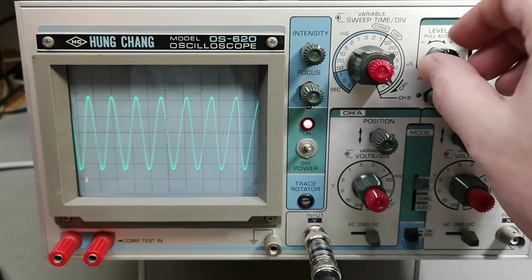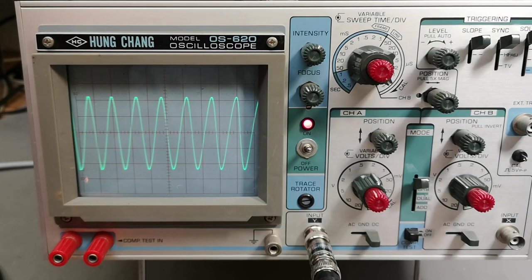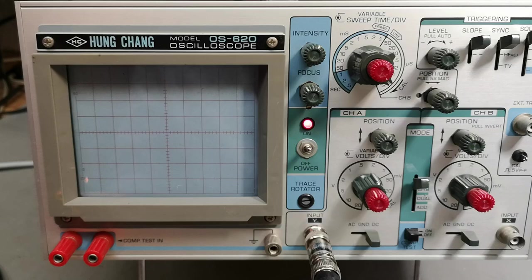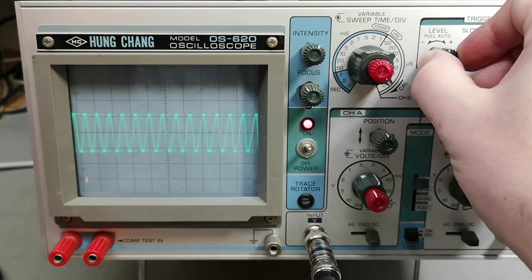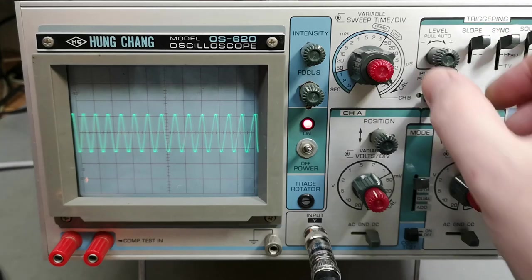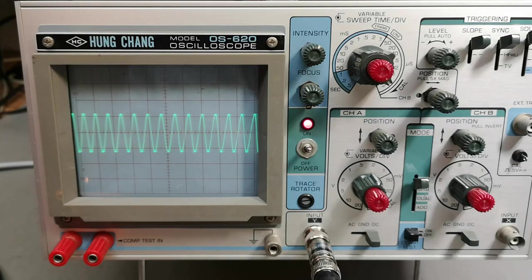And again, okay, time base is still nice and accurate. So that was 10 and here is 20. Okay, it is maybe 18. Okay, so that is how it is. So today this scope is doing 18. Of course we can just go all the way up and see, can we trigger? Yes we can.